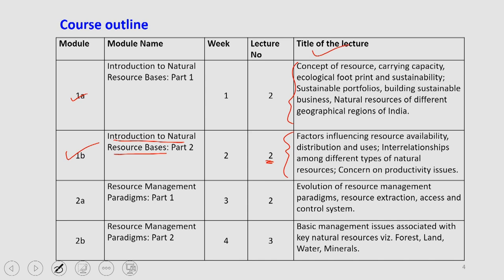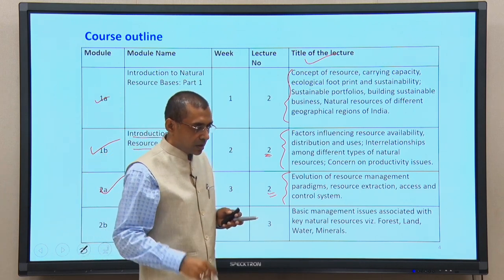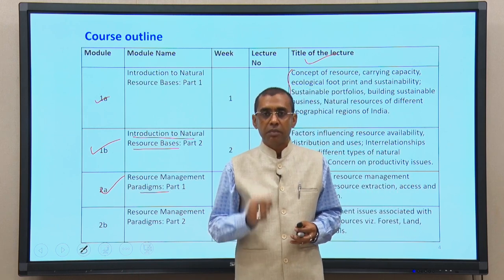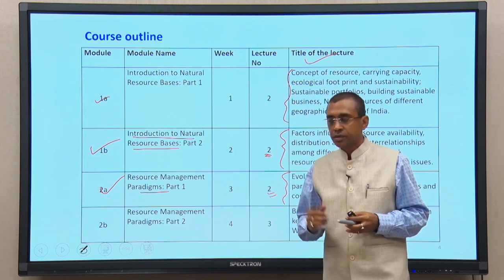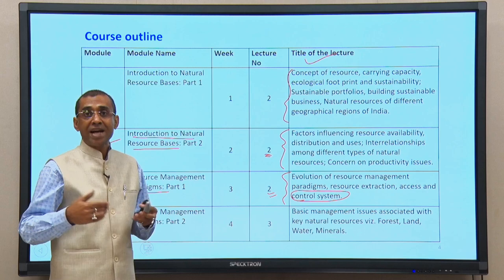Then we will go to resource management paradigms, with around two lectures covering the evolution of natural resources management and its paradigms, resource extraction, access and control systems. The control system of natural resources is a very important aspect. This is not very often discussed as part of an academic exercise, but I would like to introduce this aspect because it has a link with potential conflict as well as its addressable mechanisms.